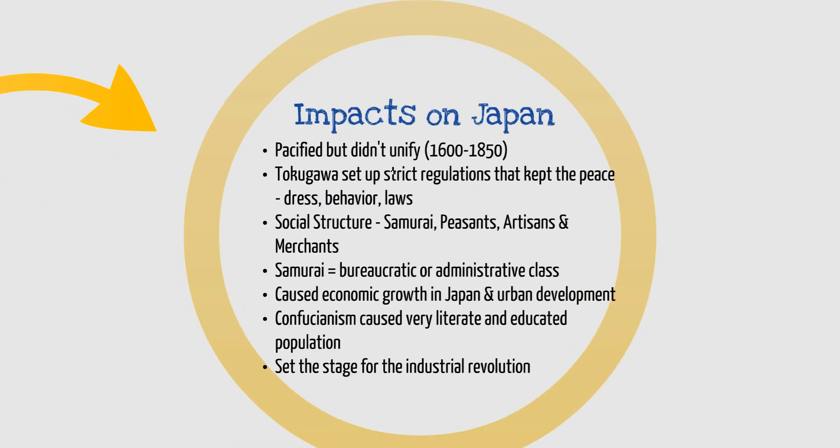Now, the impacts on Japan from all these things — thinking of cause and effect from the Tokugawa Shogunate — one big major effect was that they pacified the population. But many would argue that they didn't truly unify it; they just set up strict regulations that kept peace. So they weren't fighting, but they weren't truly unified. They kept the population pacified through strict laws on dress, behavior, and different regulations.